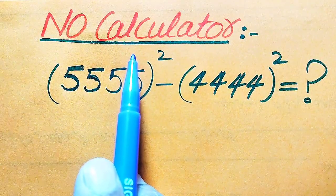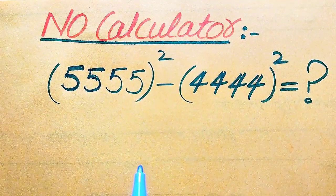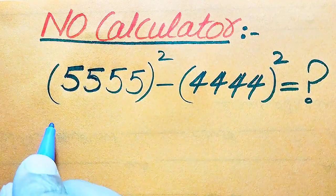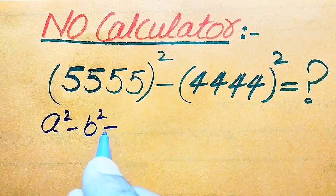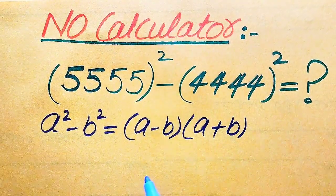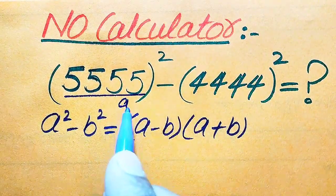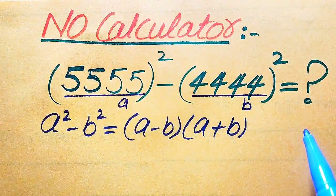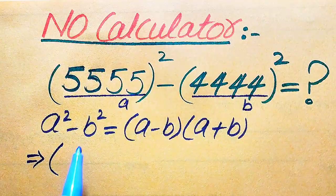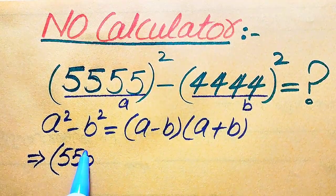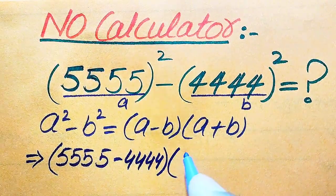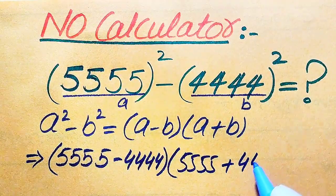This means we need to show all of the working on paper. The very first thing we are going to do is use this nice algebraic formula: a squared minus b squared equals (a minus b) times (a plus b). Here the base of the first term is a and the base of the second term is b. After applying this formula, we write the above expression as (5555 minus 4444) times (5555 plus 4444).